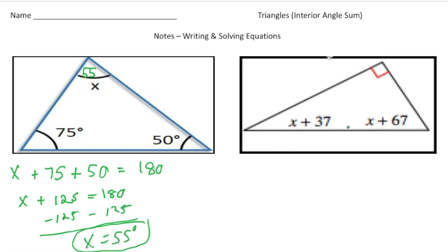This one's a little more complicated. But again, the rule is the same. Our three angles have to add up to 180 degrees. Now this one here is a right angle, so we know this one's 90 degrees. So let me write the equation. So we know that x plus 37, that's one angle, plus x plus 67, that's the second angle, plus our 90 degree angle, is going to equal 180 degrees.